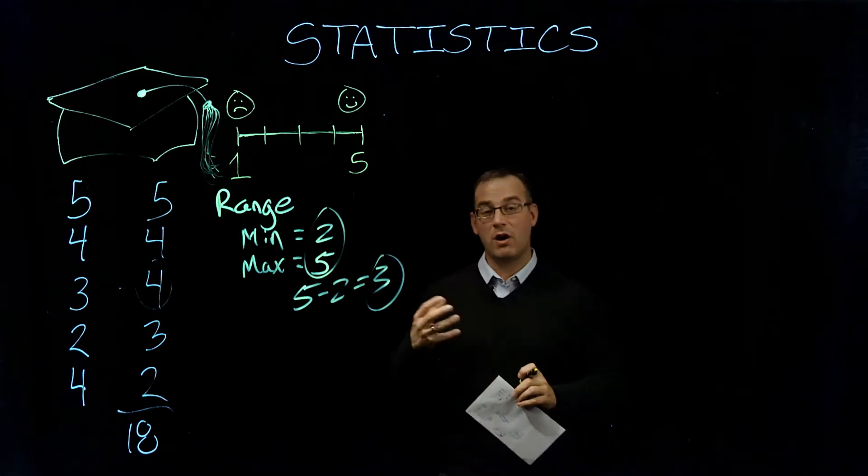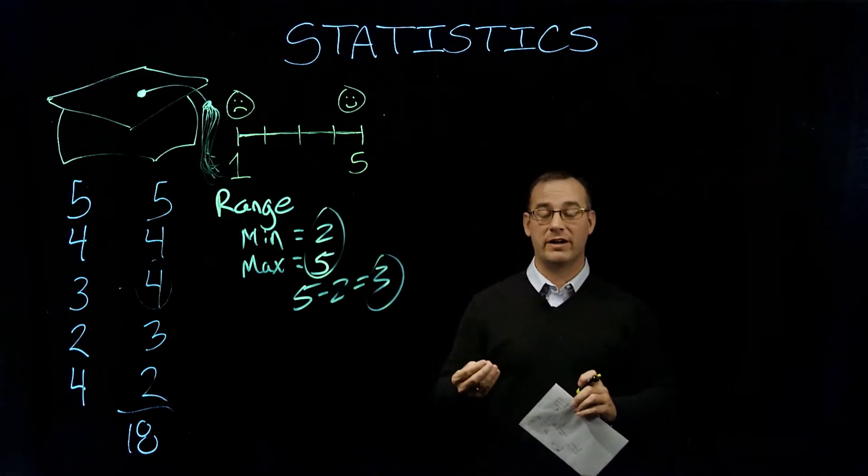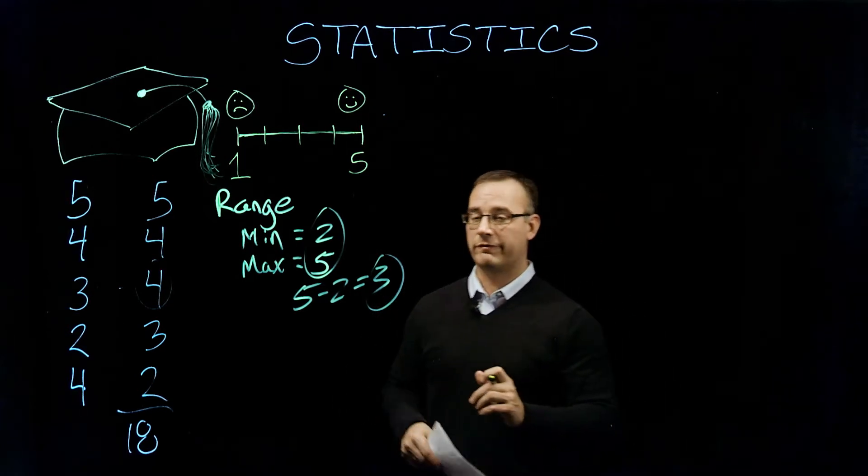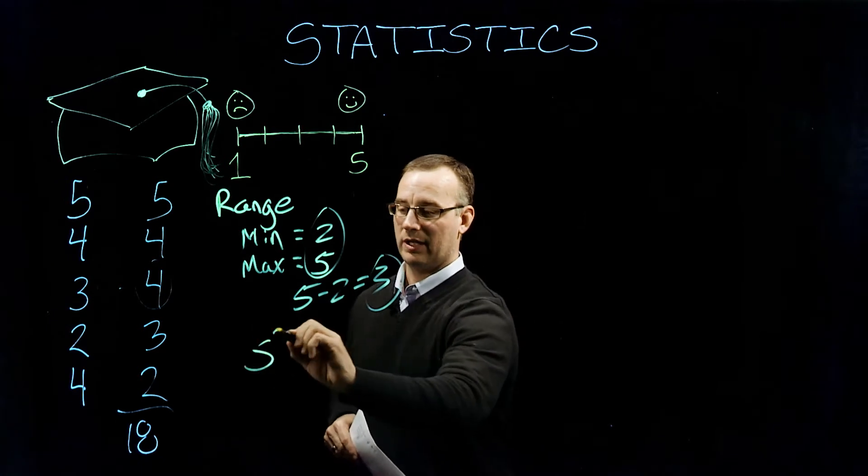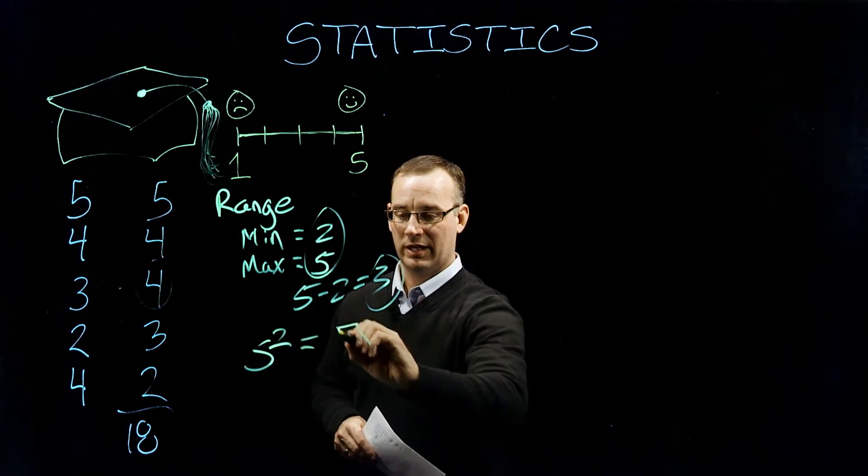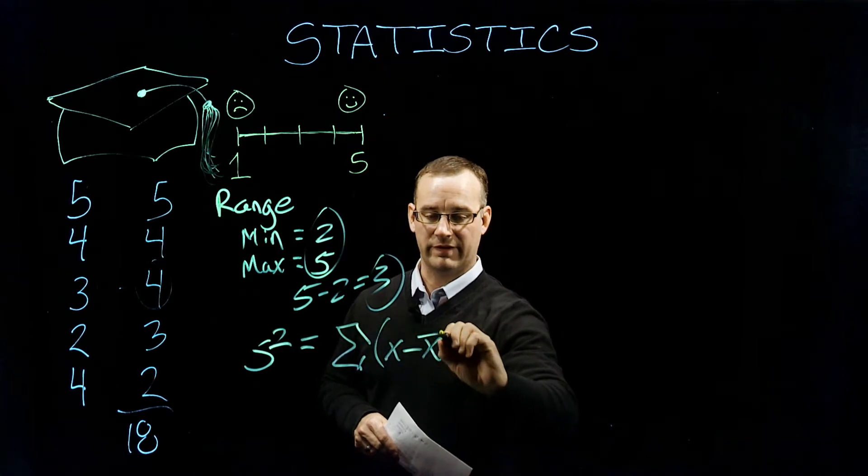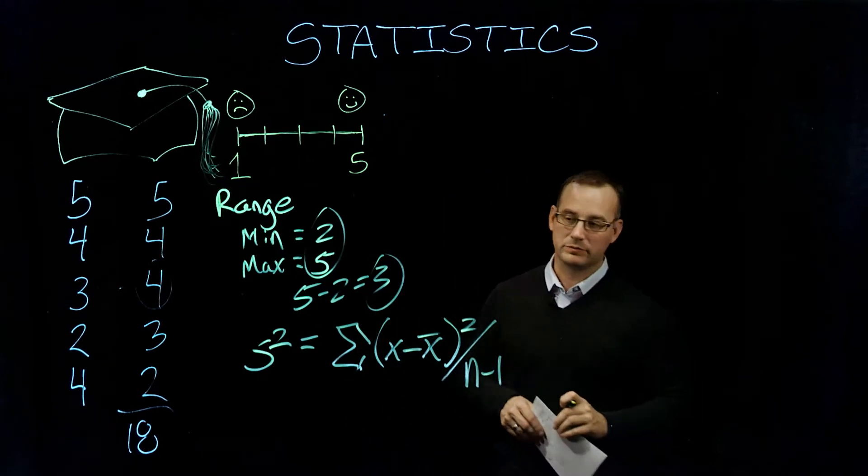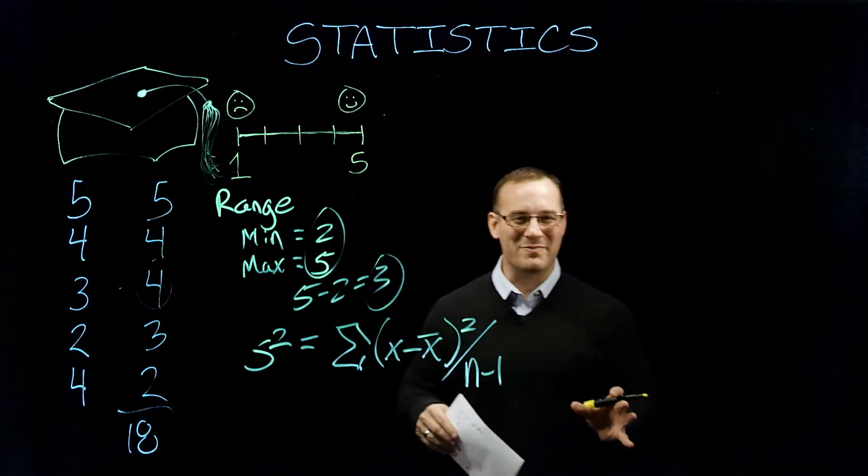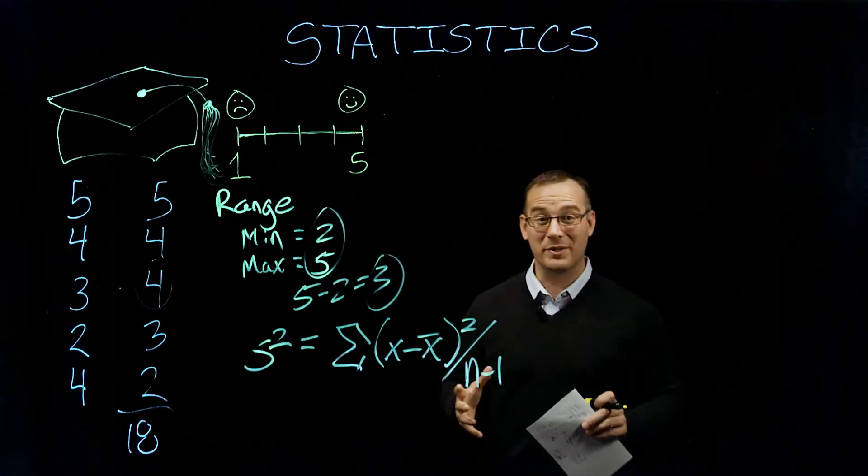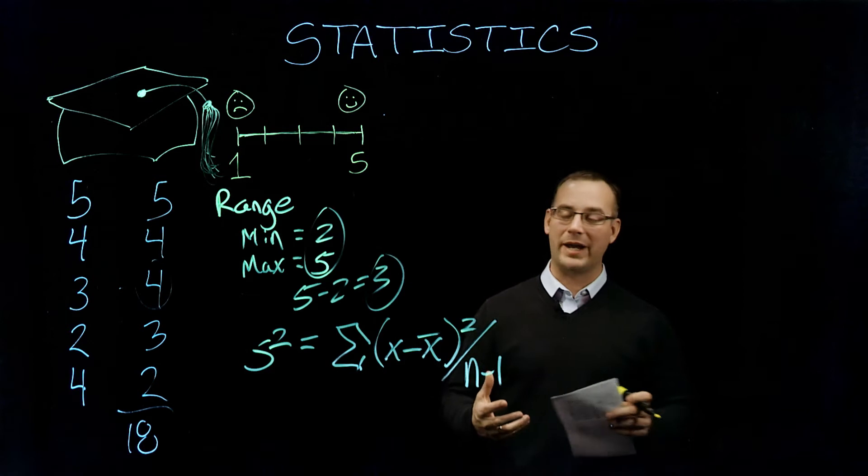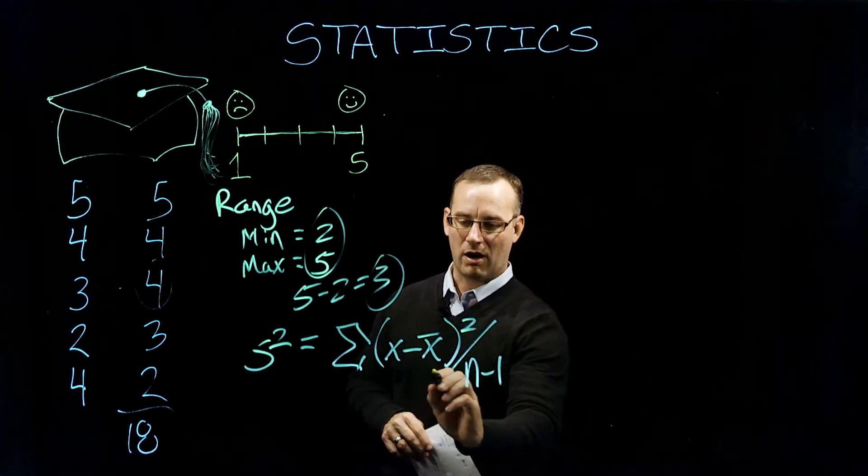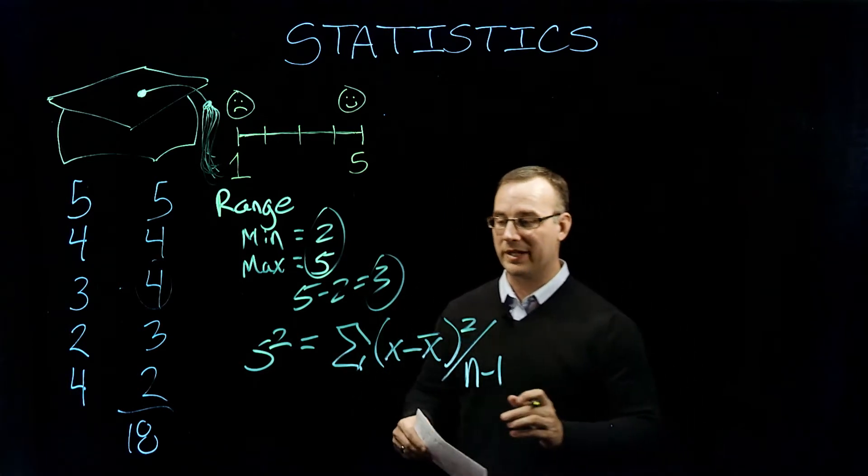Our next measure of variability beyond range is going to look at variance. And variance is going to be used to then calculate standard deviation. And so our formula for variance, which is s squared, is going to be the sum of the differences squared divided by n minus one. Now, don't be freaked out by this formula. When you first see it, it looks awfully complicated. But as we work through it in steps, you're going to see that it's extremely manageable. And so what we're going to do is we're going to first calculate this value right here - our sum of the differences from the mean squared.